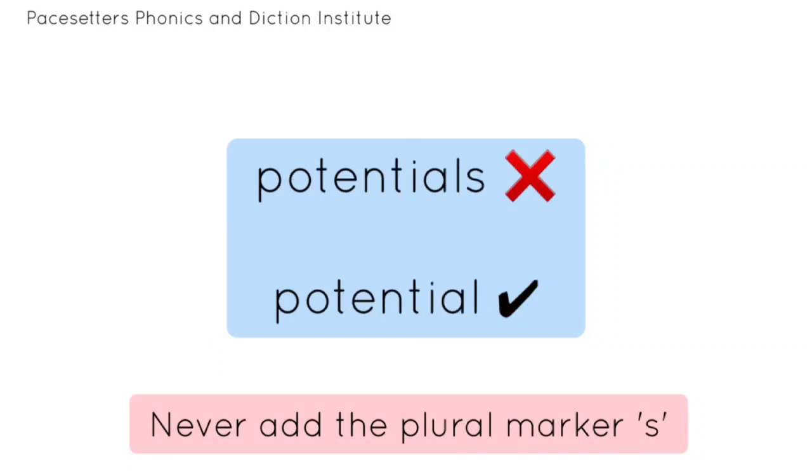Potential. Potential is spelled P-O-T-E-N-T-I-A-L. Never add the plural marker 's'.